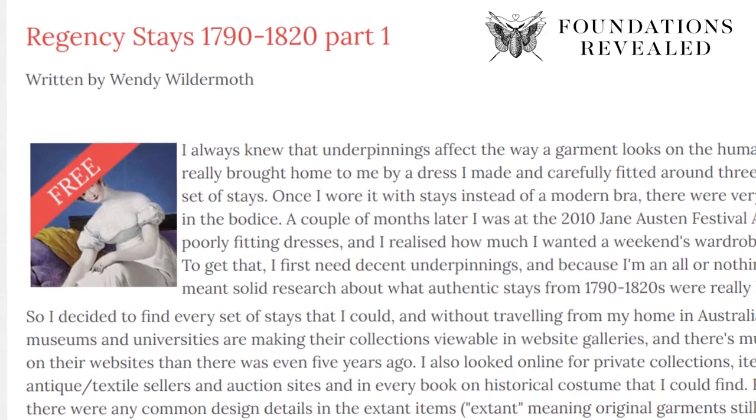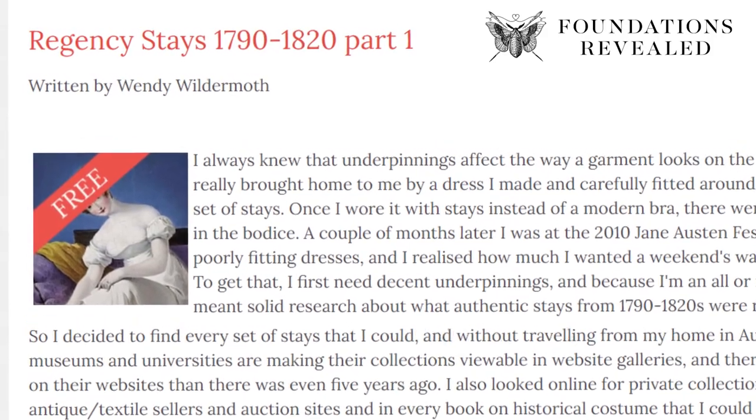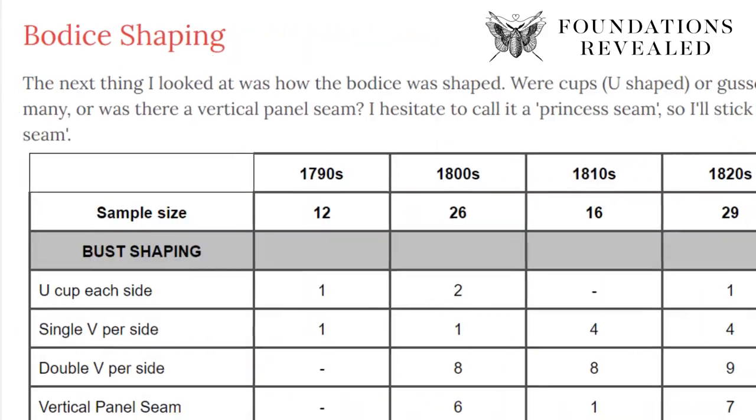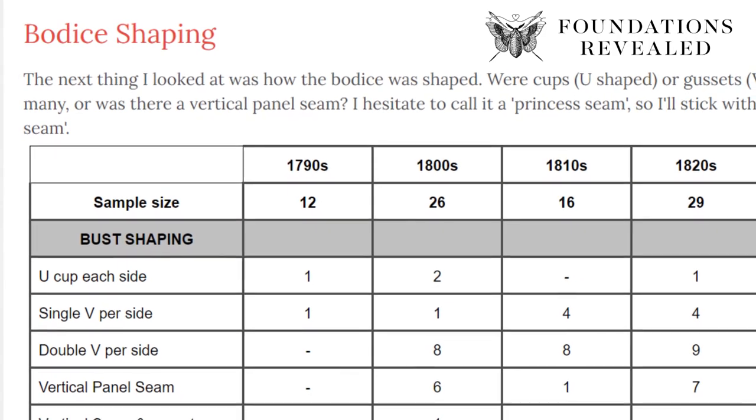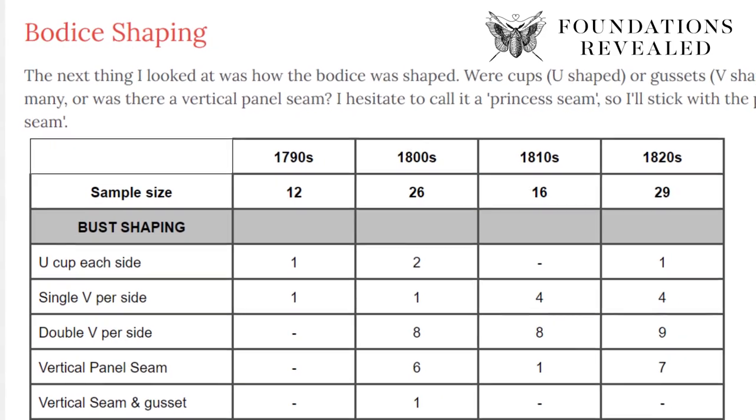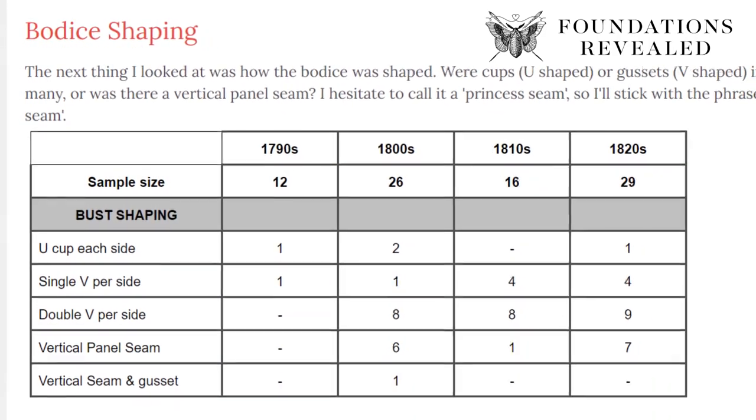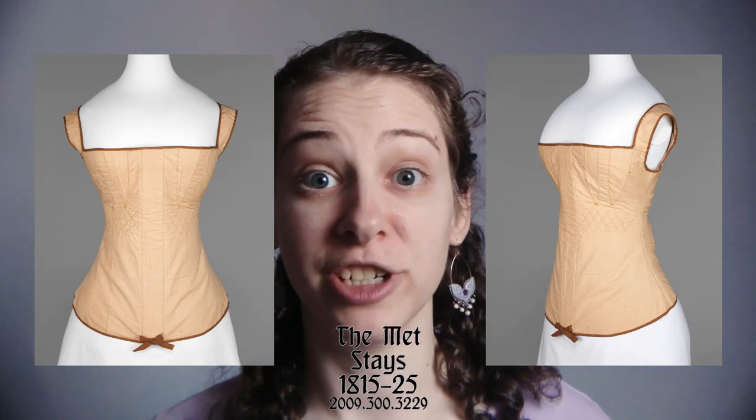There's a free Foundations Revealed article by Wendy Wildermoth about the changes in stays from 1790s to the 1820s. Of the 12 1790 stays in her sample, one pair had u-shaped cups and one pair had a single v-shaped gore per side. Double gores became popular later, during the Regency. I have decided to make my stays with a single bust gore per side, since I don't really like the look of the gathered cups. It just seems like they add unnecessary bulk. So bust gore it is!